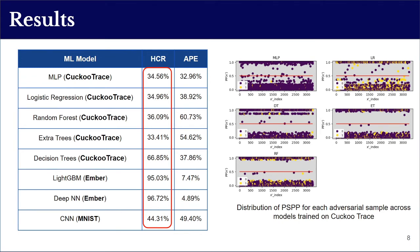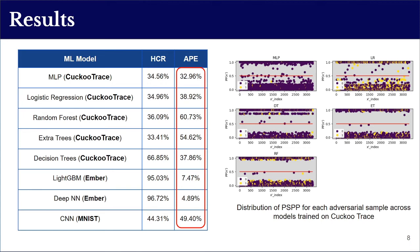These findings propose that although a perturbed sample can confuse a machine learning model to misclassify its true label, the correlation between each single feature perturbation and the misclassification is not always guaranteed. The average perturbation error results for most models are unacceptably high, reflecting that a feature perturbation strategy can lead to misclassification at the sample level while also producing a considerable number of negative perturbations at the feature level.